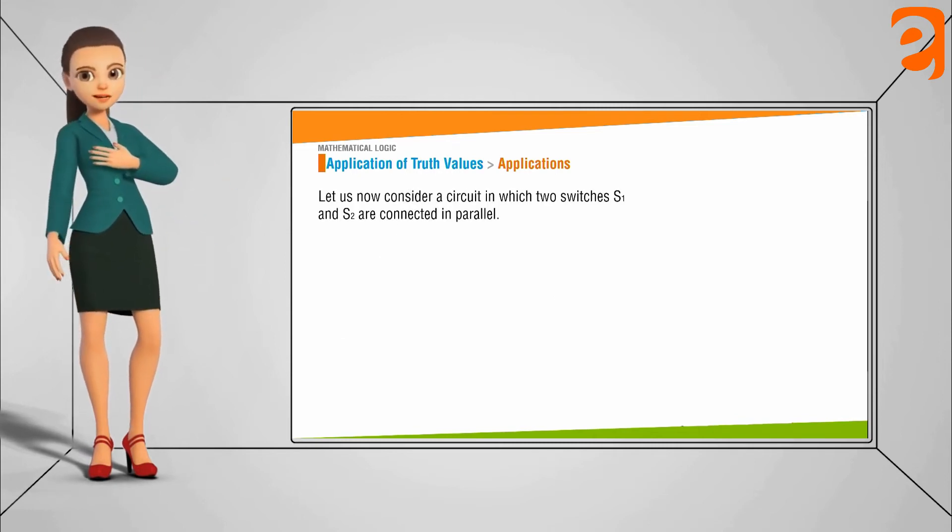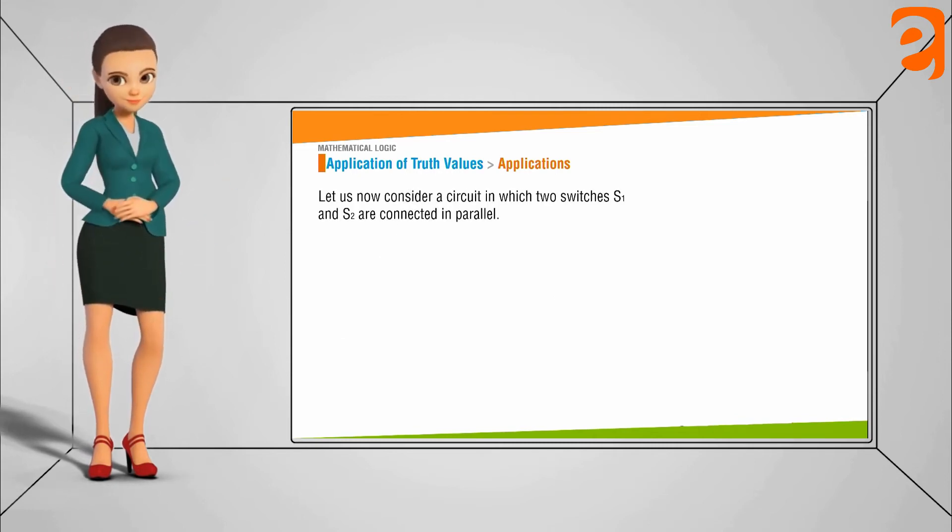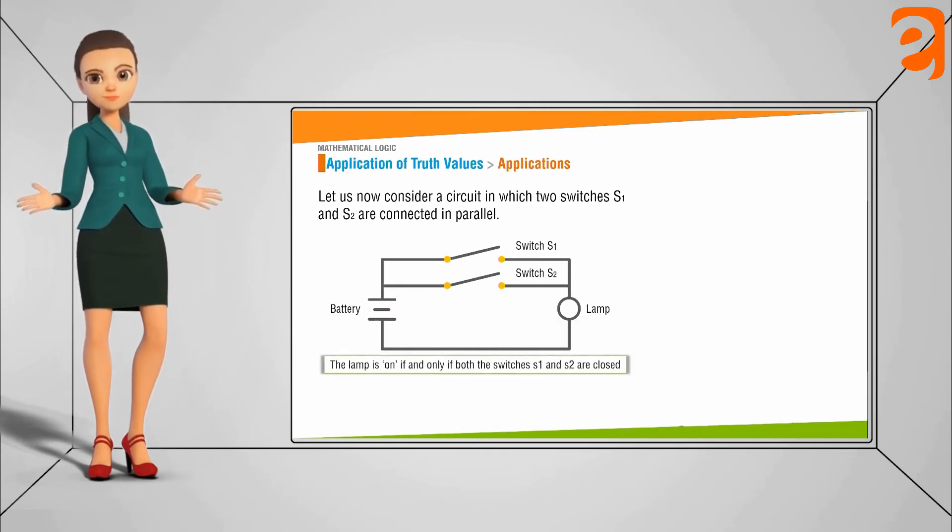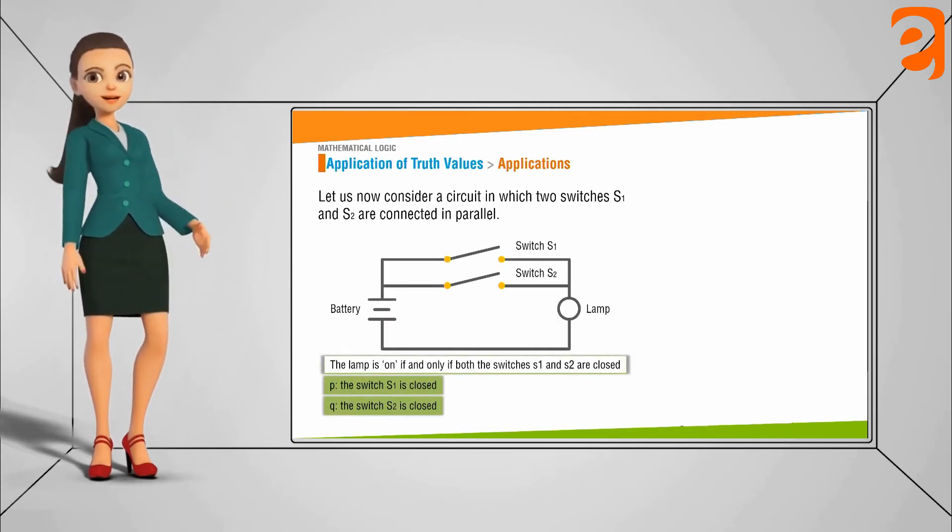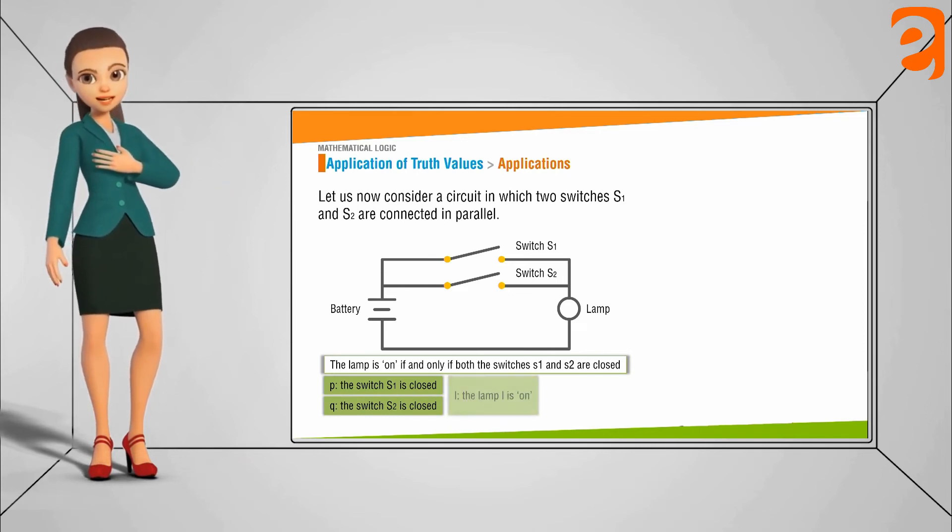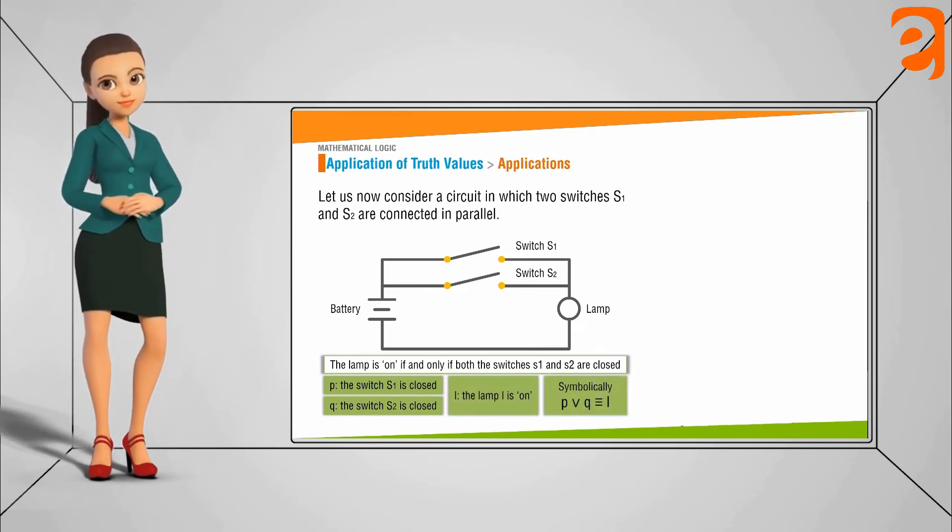Now let us consider a circuit in which two switches S1 and S2 are connected in parallel. Here we can say that the lamp is on if and only if both the switches S1 and S2 are closed.